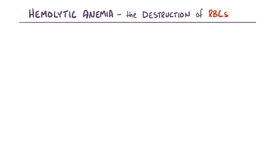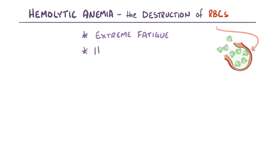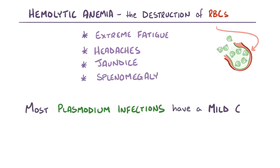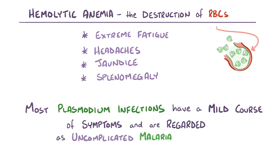In addition to fevers, hemolytic anemia — the destruction of red blood cells — also causes symptoms like extreme fatigue, headaches, jaundice, and splenomegaly. Most plasmodium infections have a mild course of symptoms and are generally regarded as uncomplicated malarial infections.